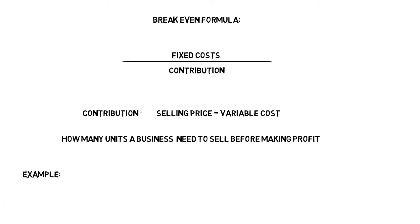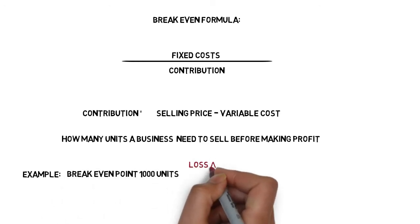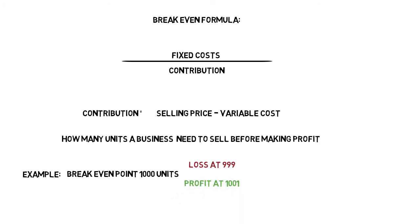For example, if a business's break-even point is 1,000 units, it will be making a loss at 999 units but a profit at 1,001 units.